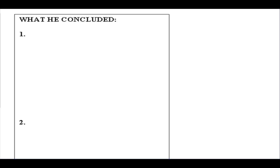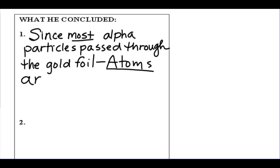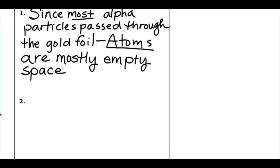What he concluded was that since most alpha particles pass through the gold foil, that atoms are mostly empty space. Nothing. Complete void. Which was a little bit different than J.J. Thompson's model, right? He had his chocolate chip cookie dough. He thought atoms were positive goop with negative electrons embedded in them. So atoms were mostly empty space.